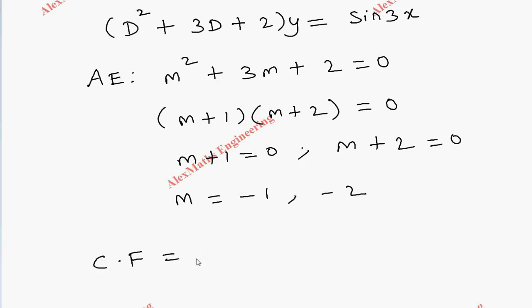As per the procedure, the complementary function is C₁e^(m₁x) + C₂e^(m₂x), which is C₁e^(-x) + C₂e^(-2x).